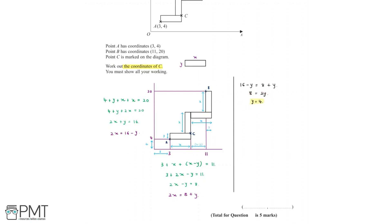Now that we know y equals 4, we can substitute into one of the equations to find x. Using 2x equals 8 plus y: since y equals 4, we get 2x equals 8 plus 4, which equals 12. Dividing both sides by 2, we find that x equals 6.